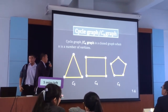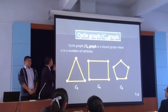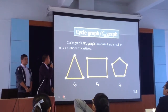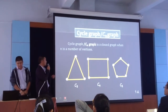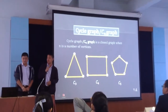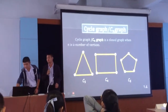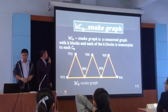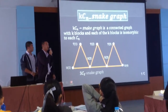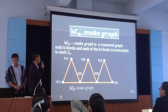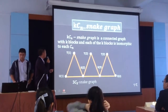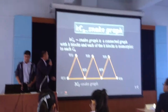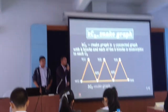Next is the definition of cycle graph. Cycle graph, or C_n graph, is a closed graph with any number of vertices. This is a series of examples which is C_4.